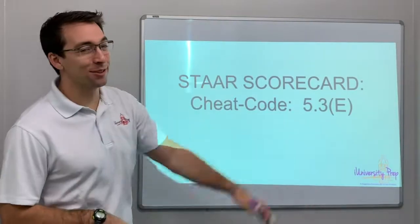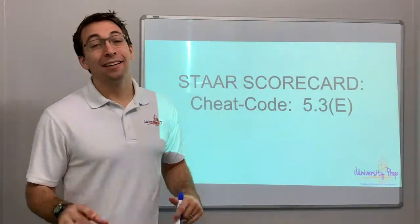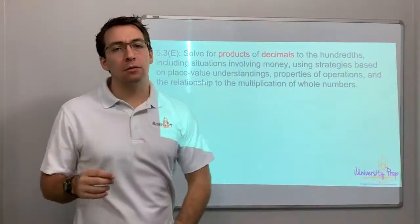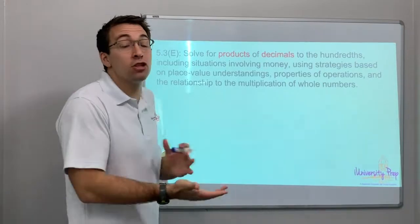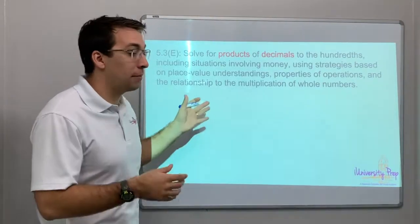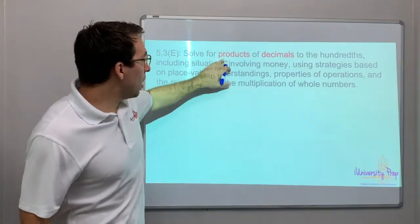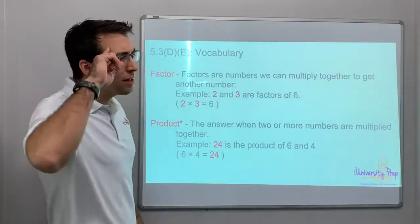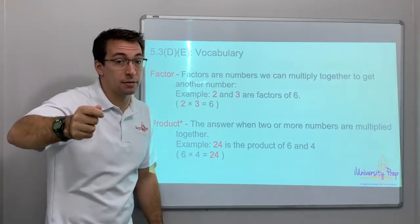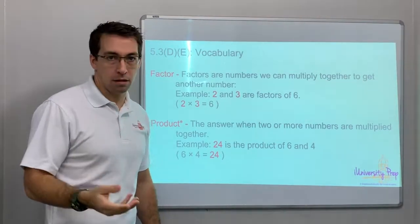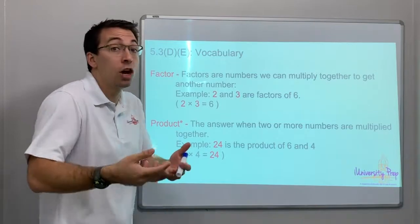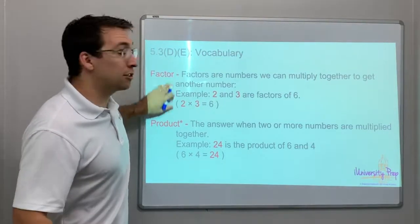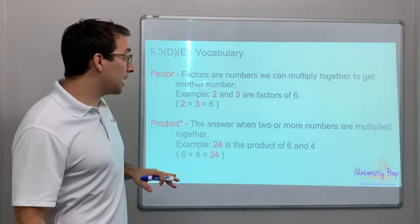Welcome back to Scorecard Cheat Code 5.3e, connected to 5.3d. We're talking about the product of decimals, multiplying decimals, except this time there's no pictures, no models, no area models. Products of decimals to the hundredths. One way we can think about hundredths and decimal value is to think about money. 98 cents is 98 hundredths. Once you hit 100 cents, you get a dollar, a whole number. Factors are the numbers you multiply together; product is the answer.